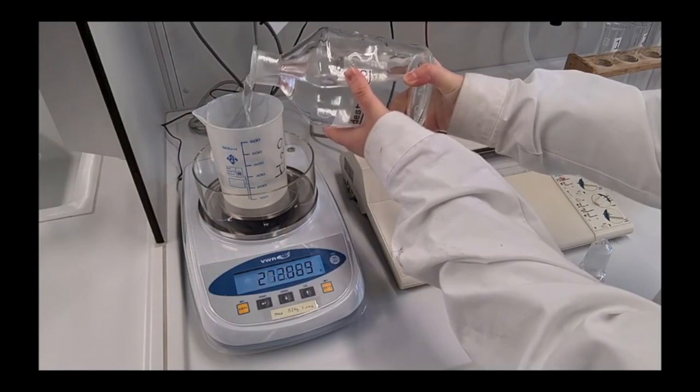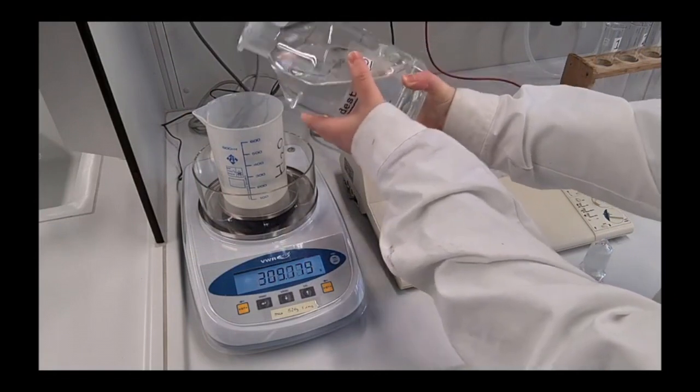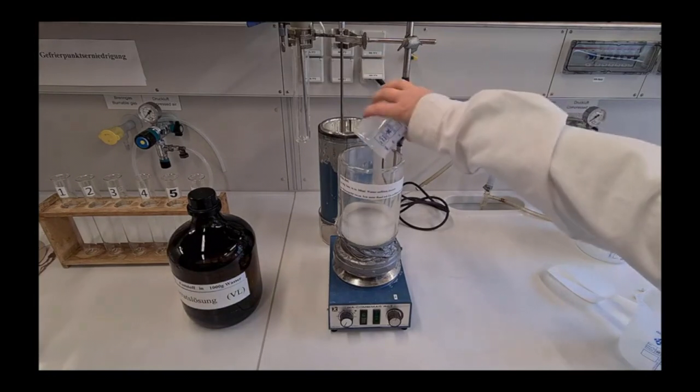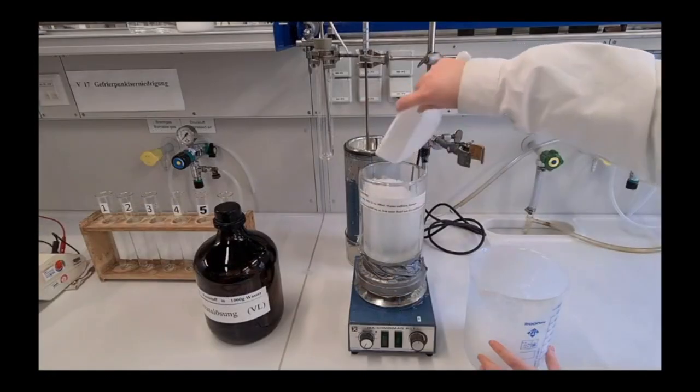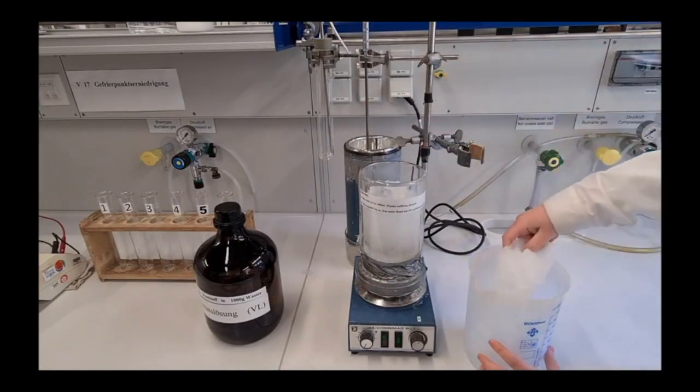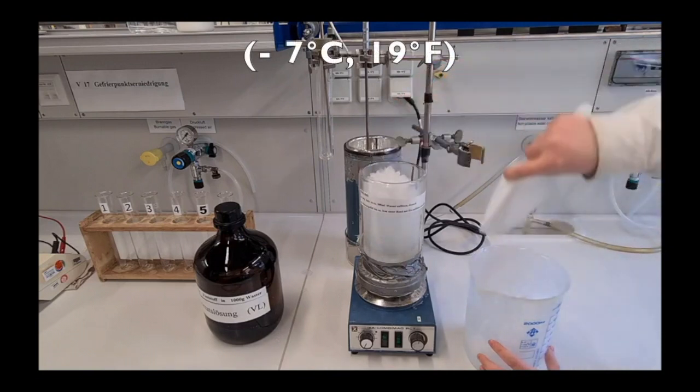For the cold bath, mix 300 milliliters of water with about 60 grams of table salt in the dual flask. Slowly add ice until the cold bath reaches a temperature of negative 7 degrees Celsius.